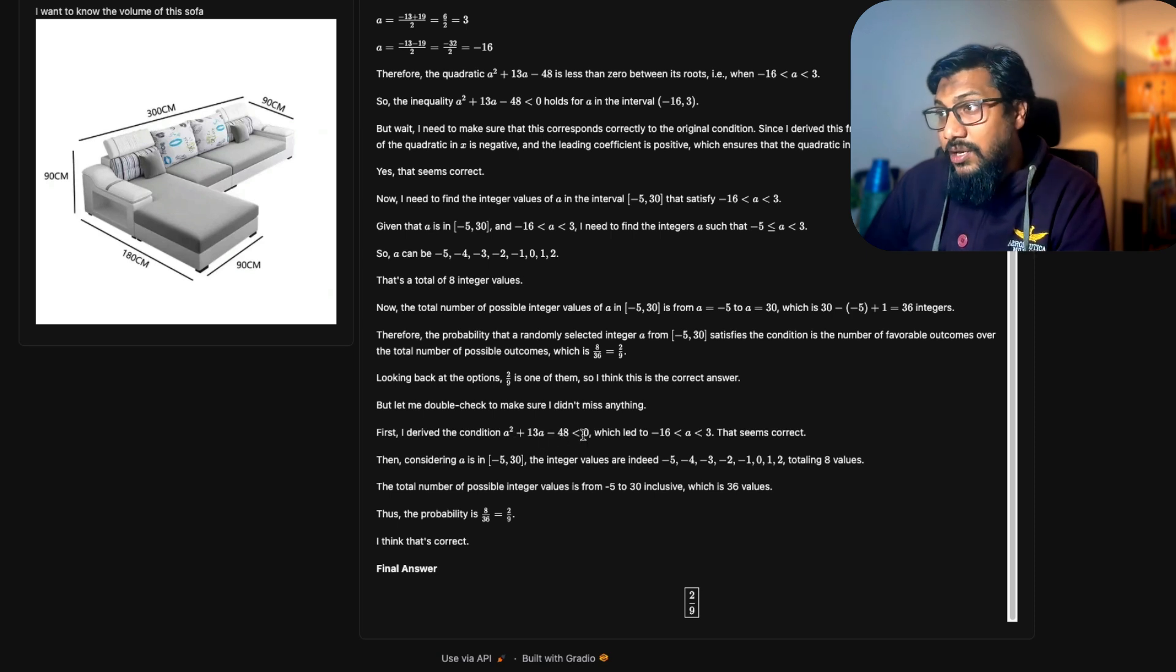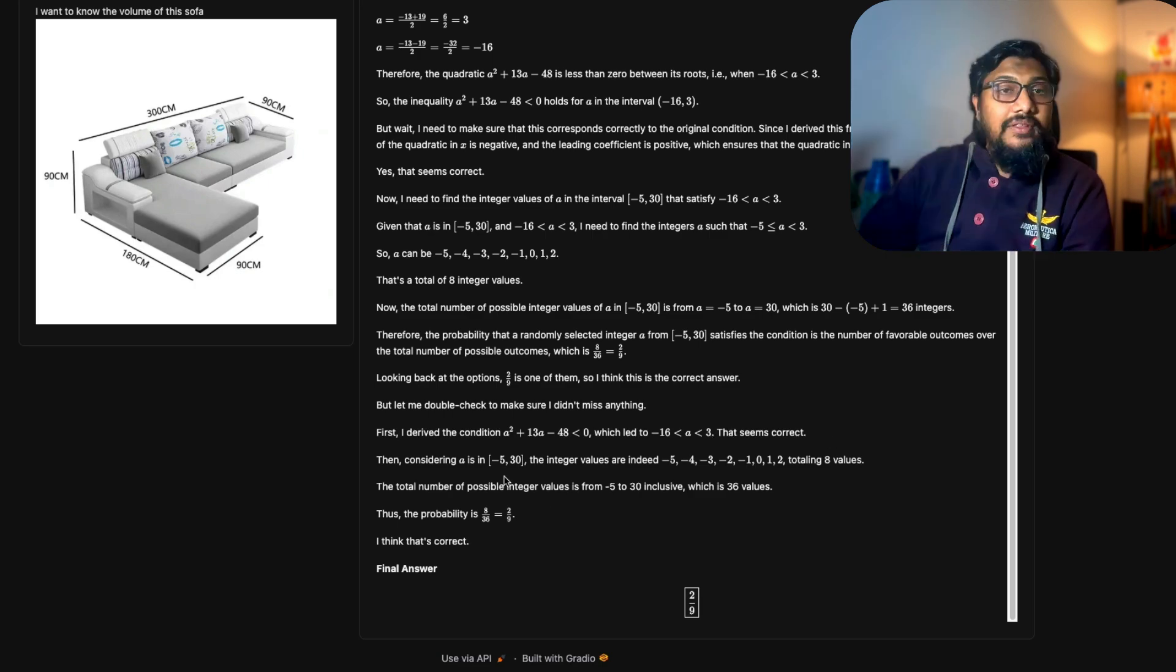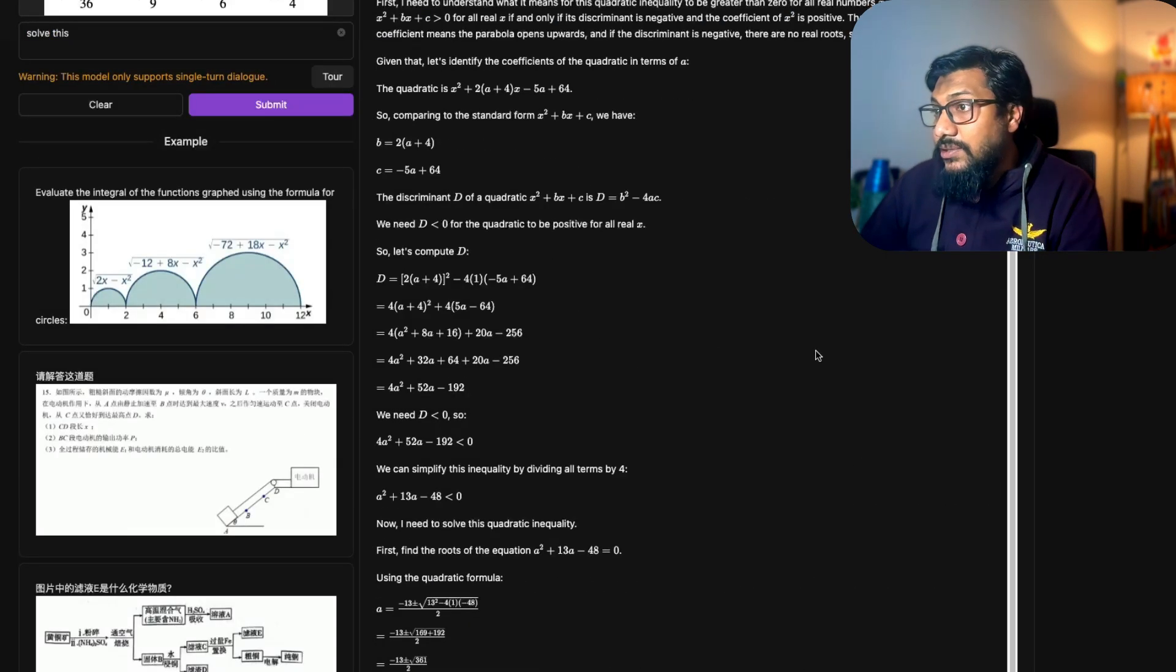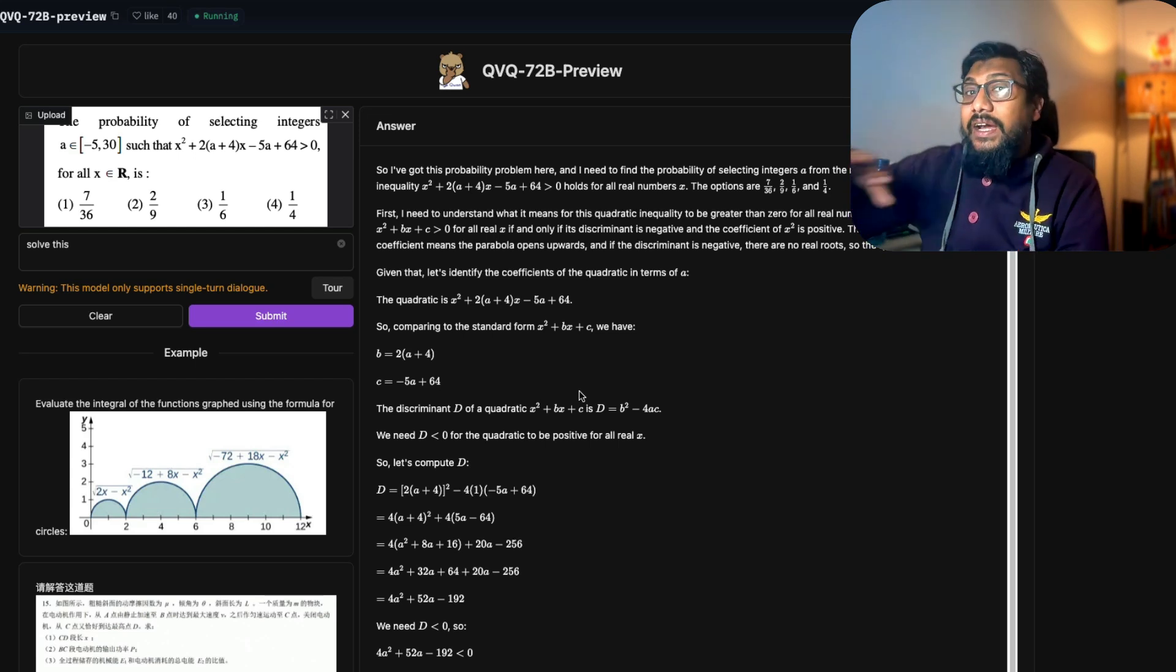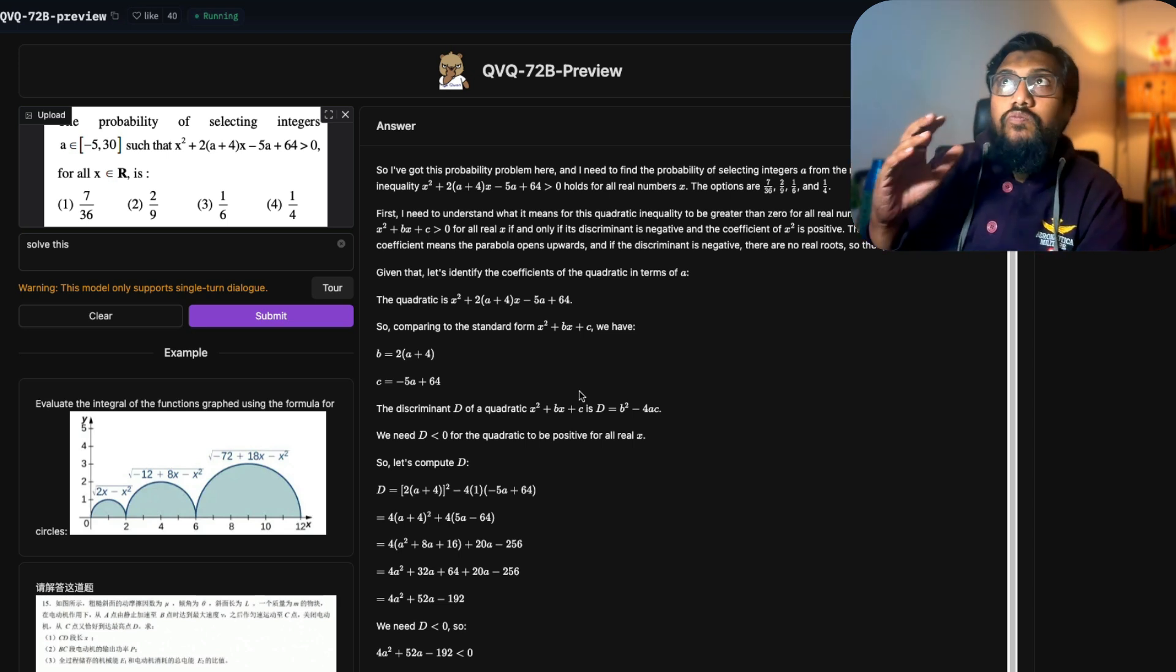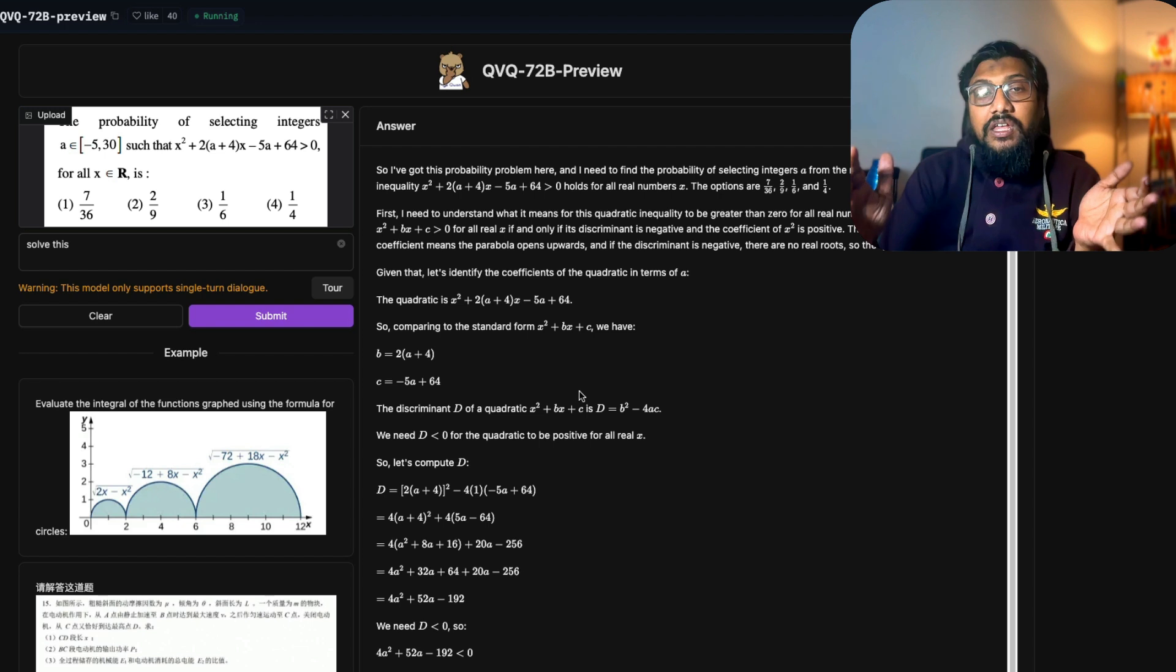First I derived a squared plus 13a minus 48 less than 0, which led to minus 16 less than a less than 3. That seems correct. Then it solved it. Honestly, the way it started, with so many equations that they're solving, I didn't think that it would solve this. But it did a pretty good job of solving this.